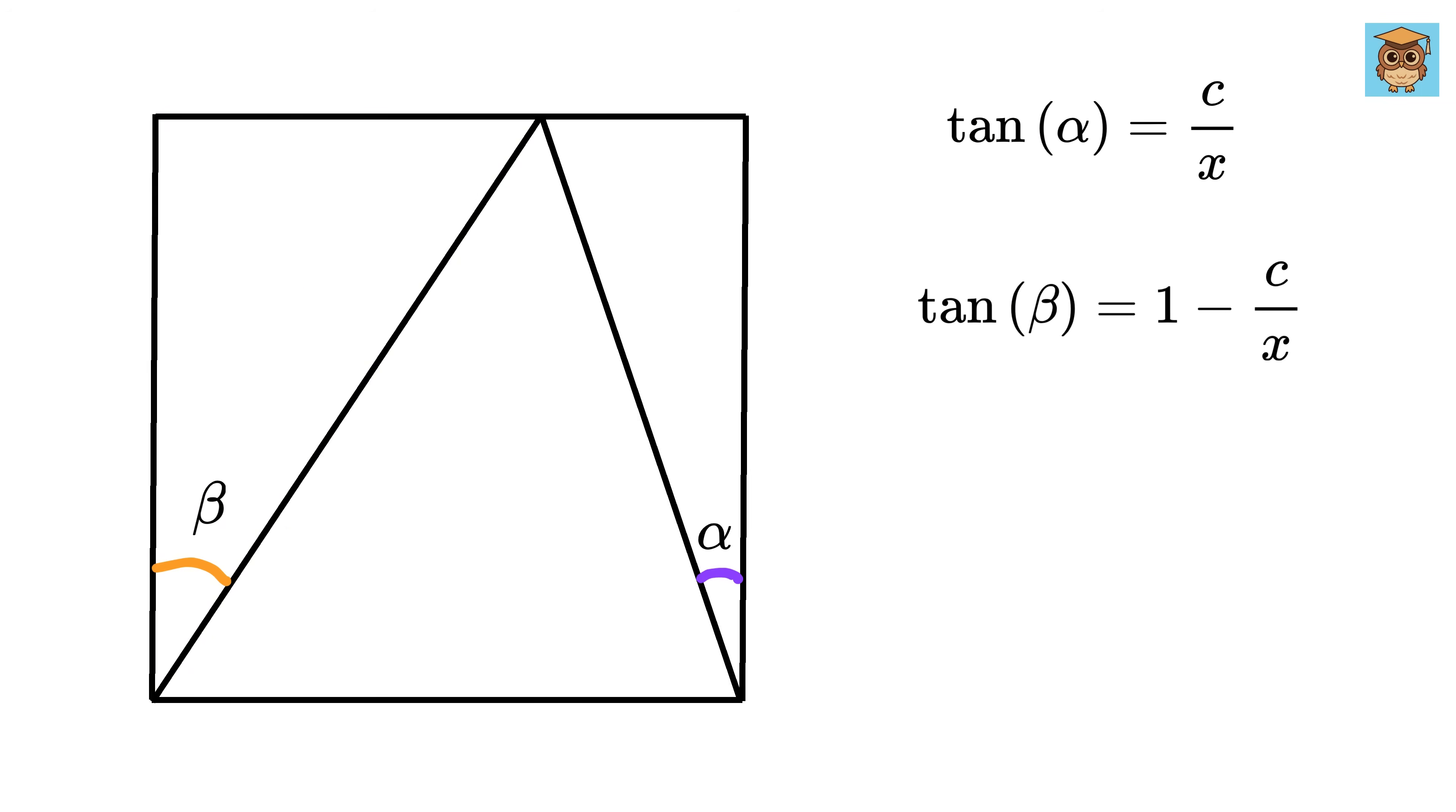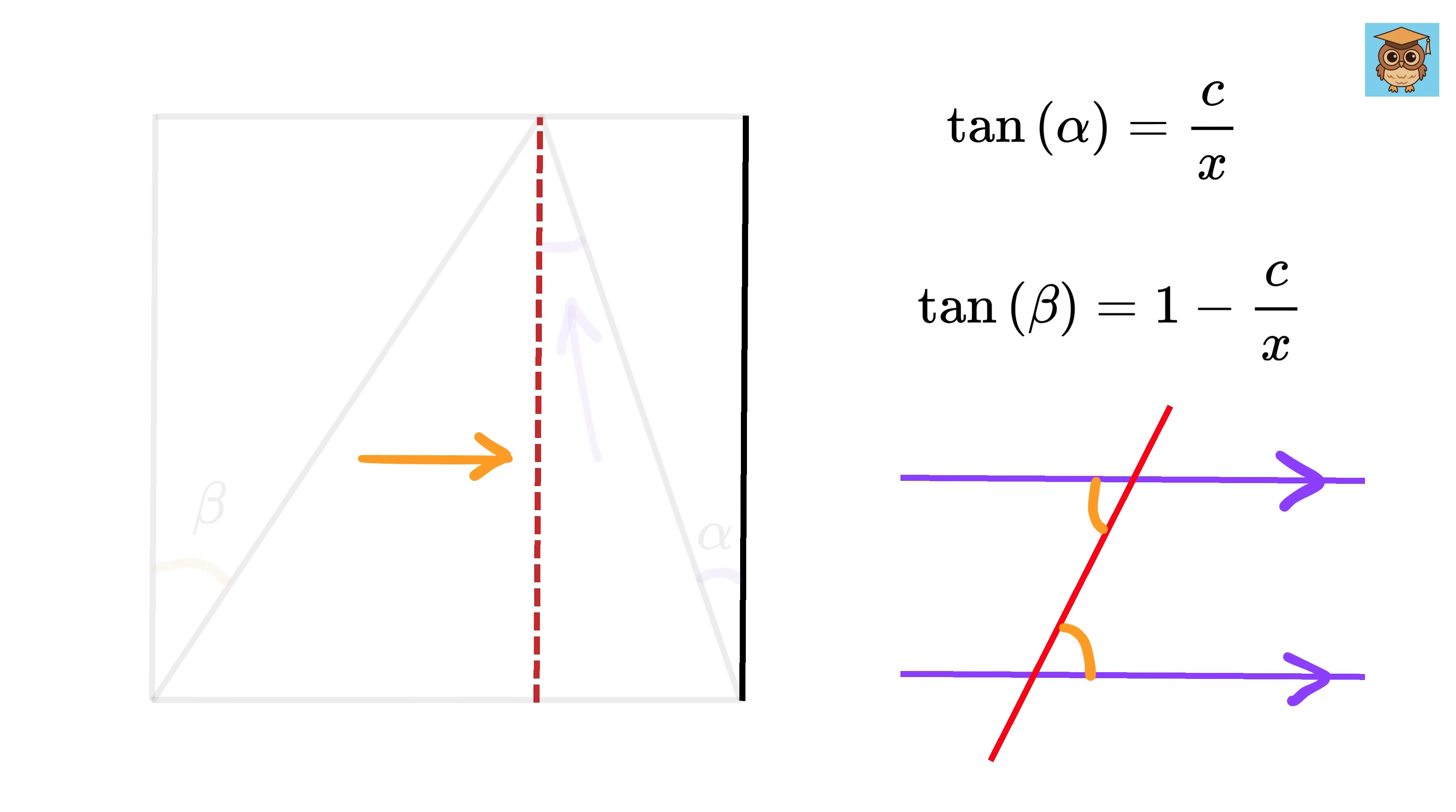Now here comes the magic. Draw this height. What will be the value of this angle? Suppose we have two parallel lines which is intersected by another line like this. Then we know that both these angles, which are also called alternate angles, will be equal to each other. So look here, this height and this vertical side of the square are parallel lines, and this side of the triangle acts as the intersecting line. Therefore, both these angles must be equal, and thus this angle is also equal to alpha.